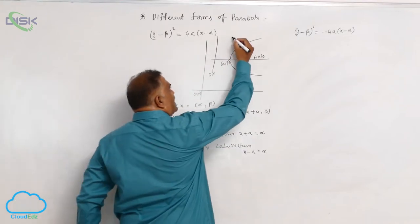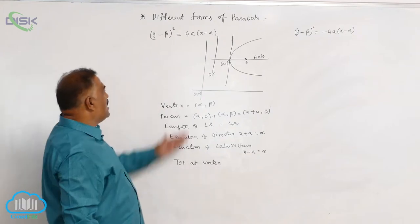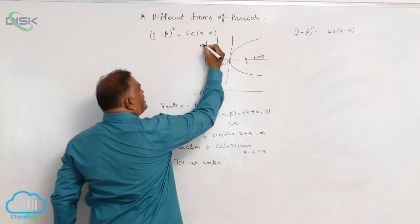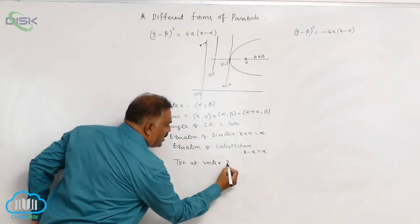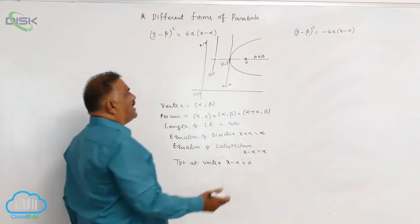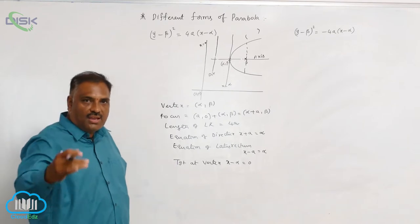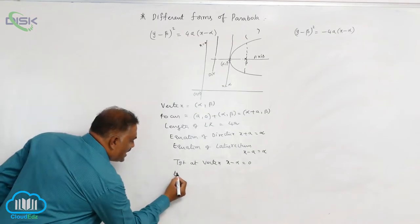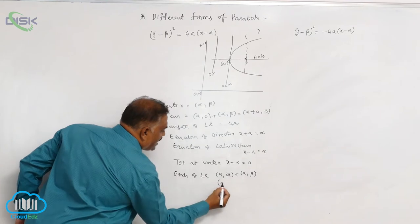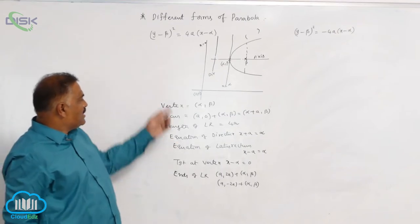Now, we require tangent at vertex. Tangent at vertex — you can see that it is parallel to the y-axis. Parallel to y-axis means this is x = 0, now this is x = α. So, x minus α = 0. Even if you want, you can write the ends of latus rectum. Previously, we know that it is (a, 2a) and (a, −2a). So, ends of latus rectum are (a + α, 2a + β) and (a + α, −2a + β).